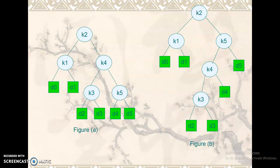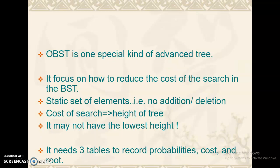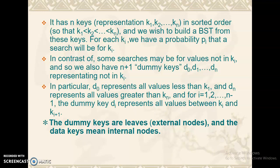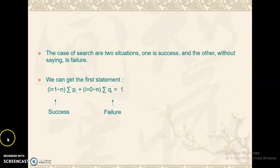We need to select which is the better BST. OBST is a special kind of advanced tree that focuses on reducing the searching cost. The precondition is that it should have a static set of elements — no additions or deletions. The cost of searching depends on the height of the tree, but elements that are frequently accessed should be present near the root. The structure has K1 to Kn as keys and D0 to Dn as dummy nodes.